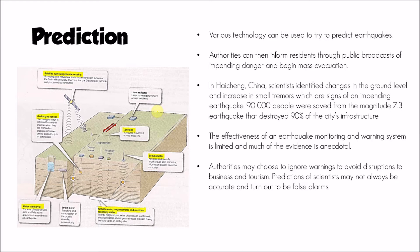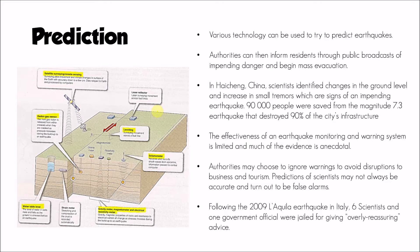When earthquakes do happen, there are other techniques to help limit the damage. Following the 2009 earthquake in L'Aquila, Italy, six scientists and a government official were jailed for giving overly reassuring advice in the buildup. At a press conference, they said an earthquake was unlikely — then the town was hit by a magnitude 7 earthquake which killed several hundred people. This illustrates the dangerous ground involved in making predictions based on relatively weak evidence.